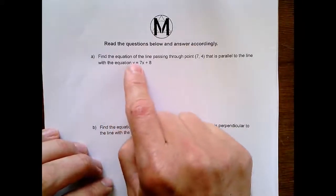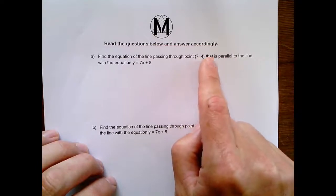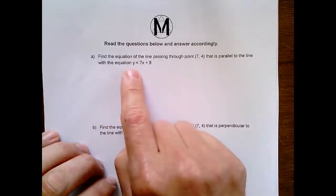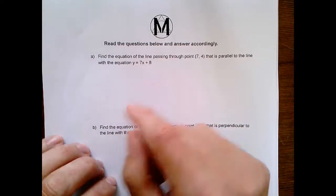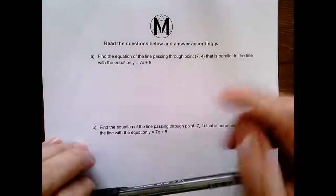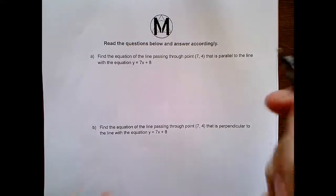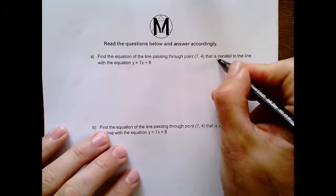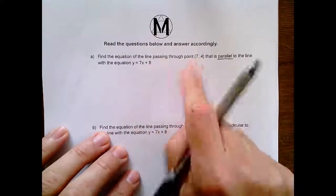So let's see here. First, find the equation of the line passing through point (7,4) that is parallel to the line with the equation y equals 7x plus 8. Okay, so this question is testing to see if you understand what it means when lines are parallel. When lines are parallel, that means they have the same slope.